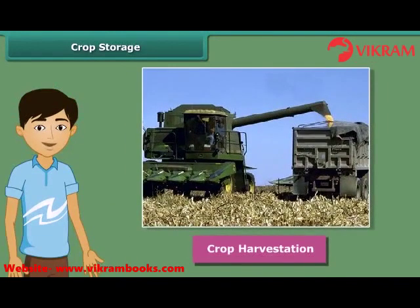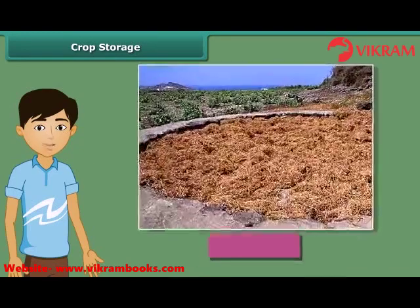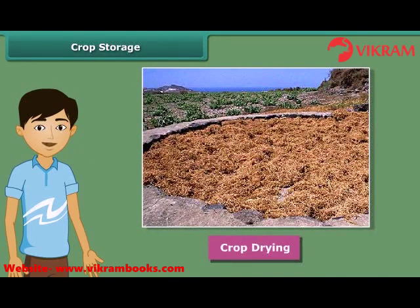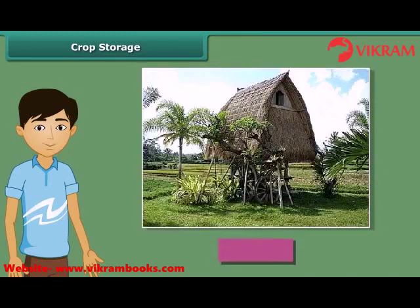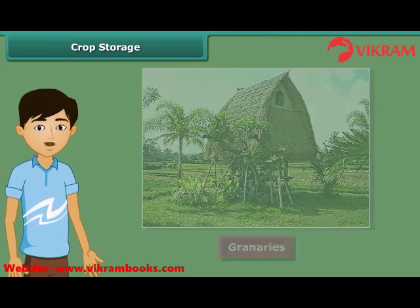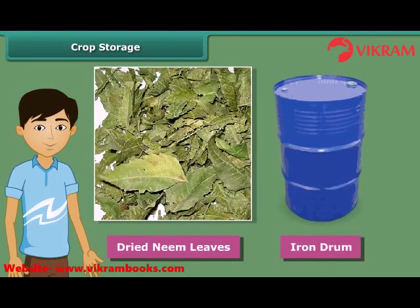Once harvesting is done, crops are stored in huge storages. We should keep some precautions to store crops. If the harvested grains are stored without drying, they may get spoiled or attacked by organisms and will lose their germination capacity. So the grains should be properly dried in the sun to reduce the moisture in them. Farmers stock grains in jute bags or metallic bins, but for large scale storage, farmers use silos and granaries. People also keep dried neem leaves in an iron drum for storing food grains, because these dried neem leaves protect the grains from pests and microorganisms.